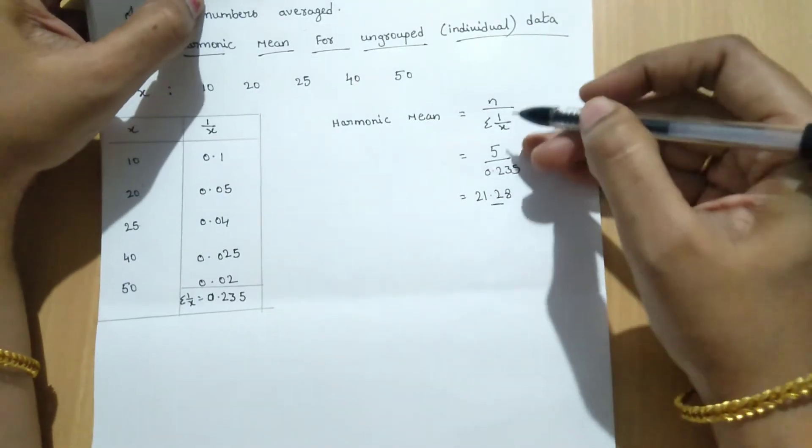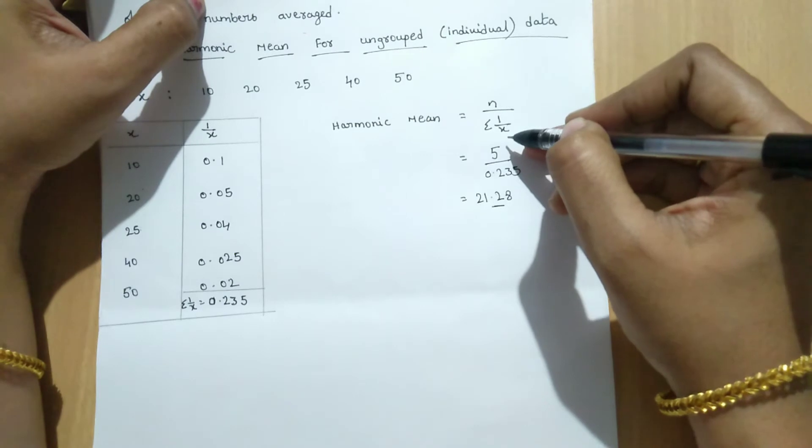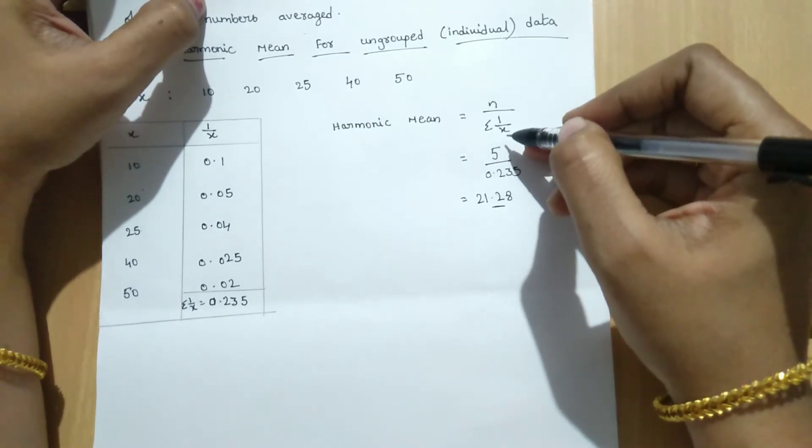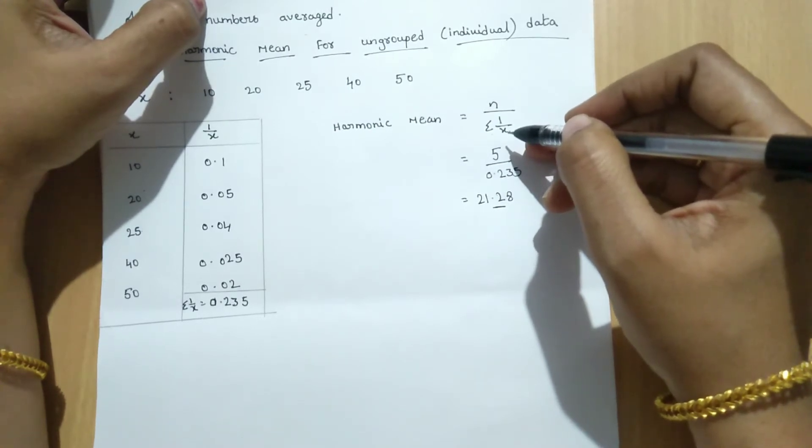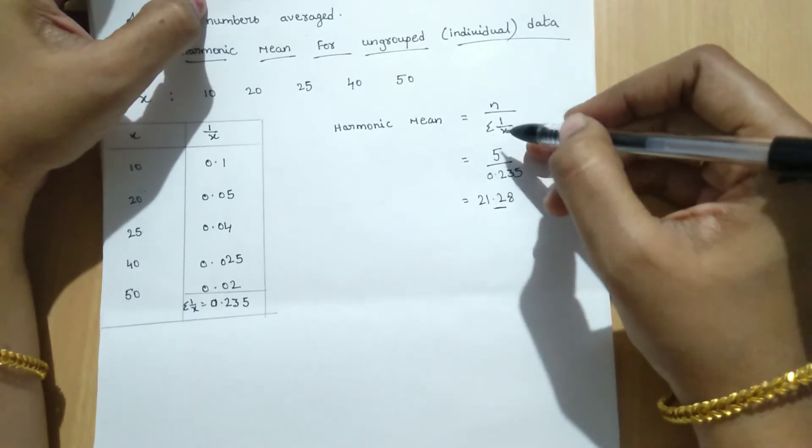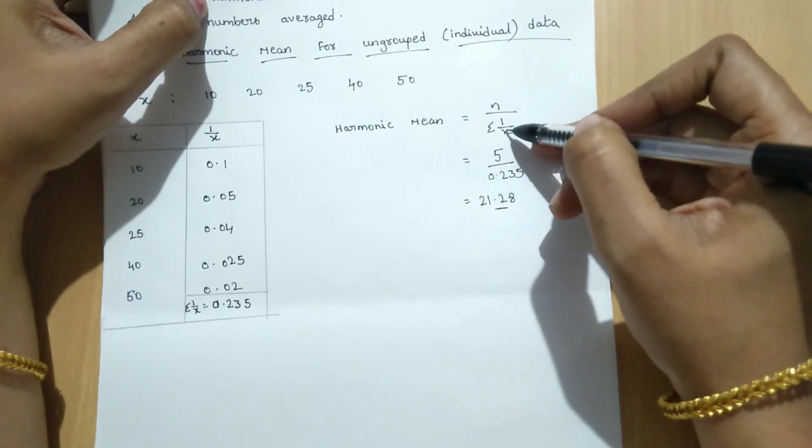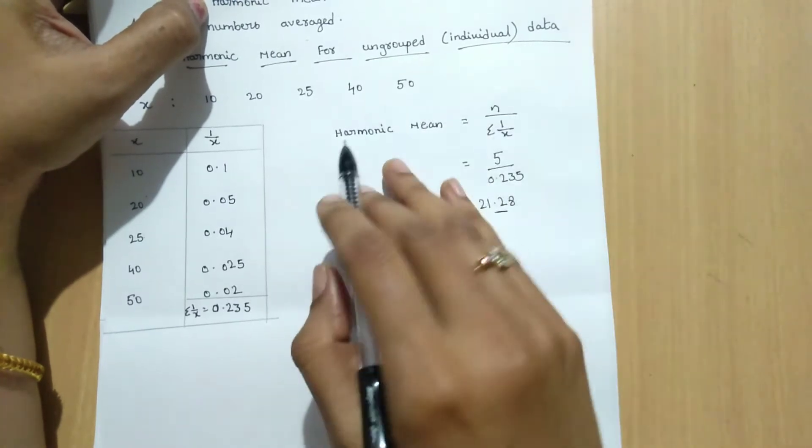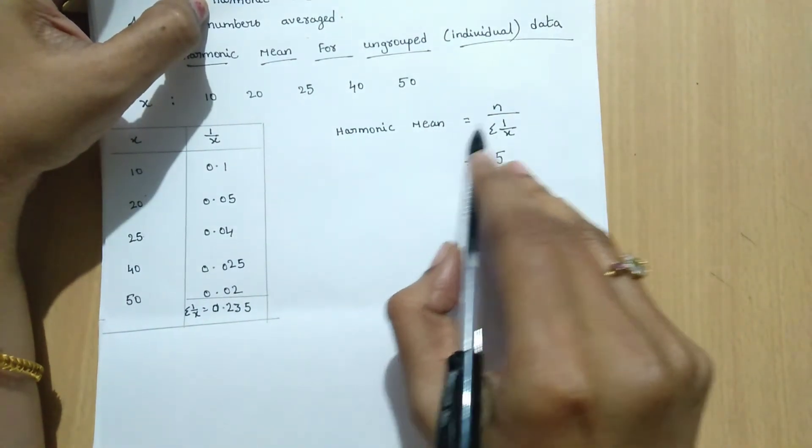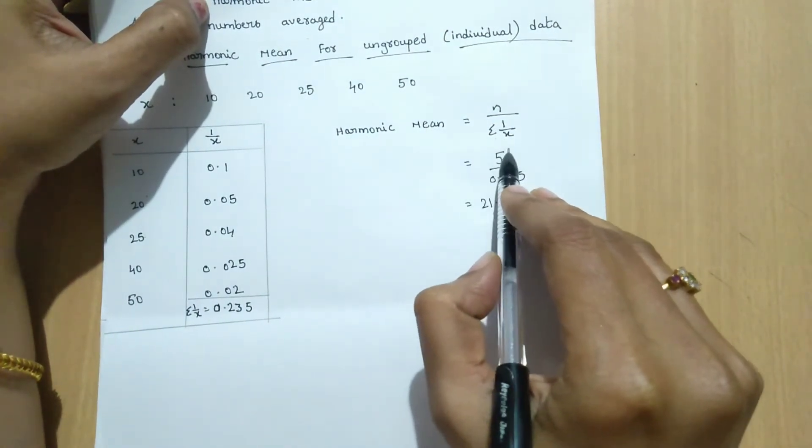Here reciprocals means 1 by x values are calculated. Just like arithmetic mean is calculated as x bar equal to summation x by n, this is the reverse - we use 1 by x values to calculate harmonic mean. The formula is harmonic mean equal to n by summation 1 by x.